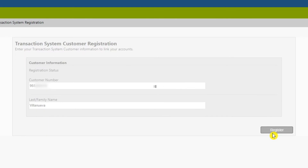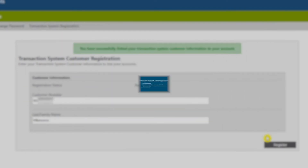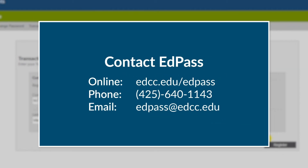Please be aware of the following. New Students: You can only complete this part two business days after registration and once EdPass cards become available to new students. Please check the EdPass website for when new cards will be available for your quarter. New Employees: You can only complete this part two business days after Edmonds College Human Resources has completed your paperwork, or on your start date. Please contact the EdPass office directly if you have any questions.